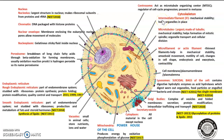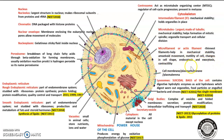Cytoskeleton is made by intermediate filaments which provide mechanical stability and hold organelles in place. Microtubules are the largest cytoskeletal molecules, made up of tubulin; they provide mechanical stability, help in formation of the mitotic spindle, organelle transport, and cellular division. Microfilaments or actin filaments are the thinnest filaments, helping in mechanical stability, amoeboid movement, motility of the cell, changes in cell shape, endocytosis, and exocytosis. Centrosomes are the microtubule-organizing center for chromosomal disjunction and regulators of cell cycle progression.